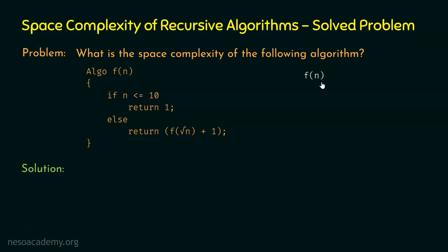Let's start from f(n) — this is the first function call. Let's assume that n is neither less than nor equal to 10, so the base case is not satisfied and the else block will be executed. In the else block, we have return f(√n) + 1. We are only interested in the function calls, so from f(n) we are calling f(√n).